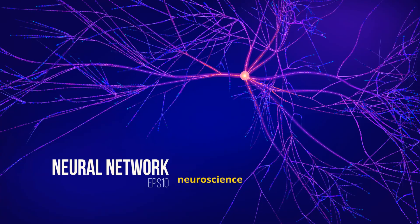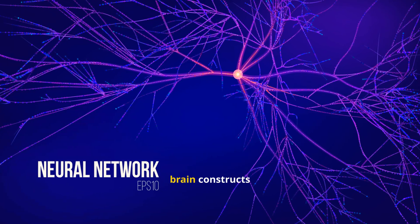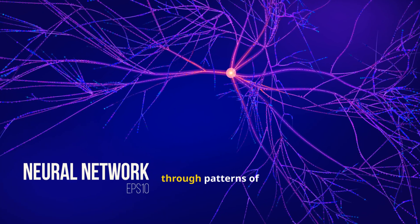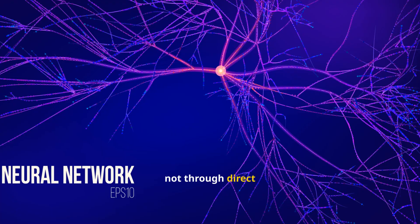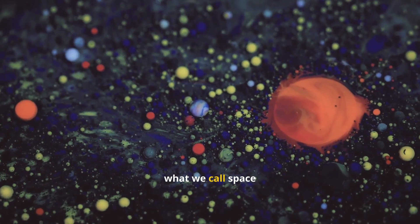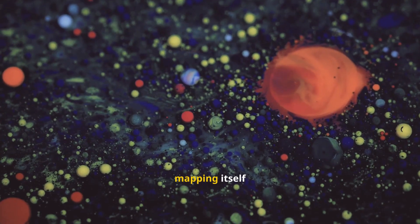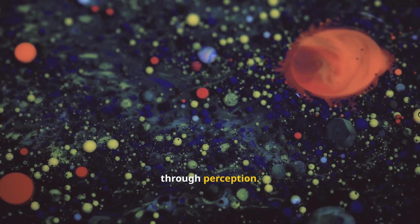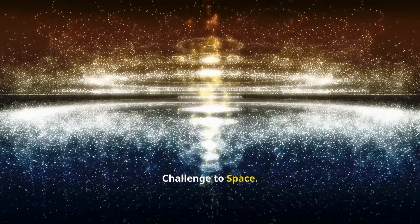Even modern neuroscience supports this. The brain constructs spatial awareness through patterns of sensory correlation, not through direct access to space itself. In other words, what we call space may be awareness mapping itself through perception.